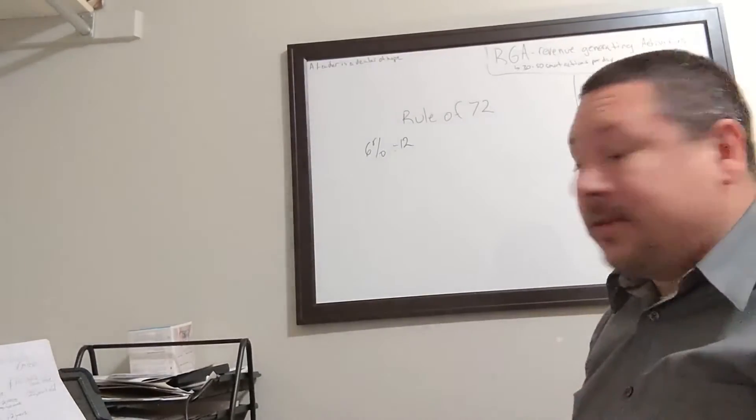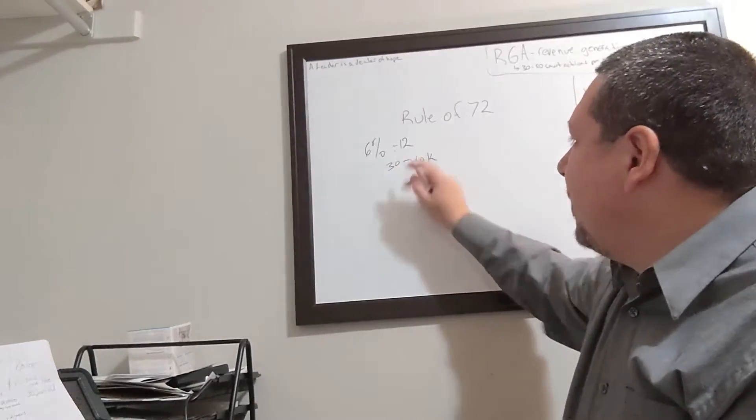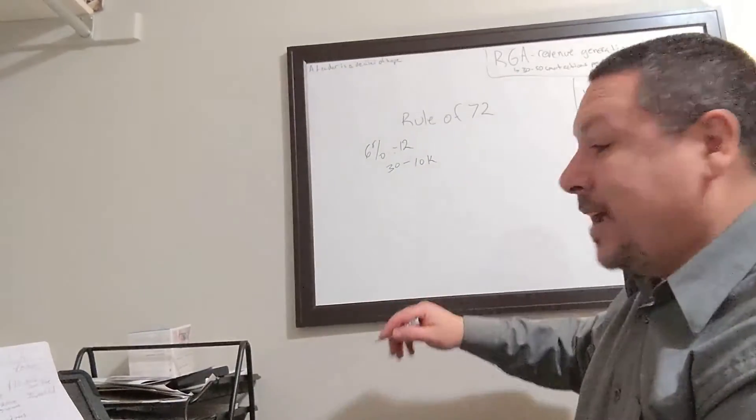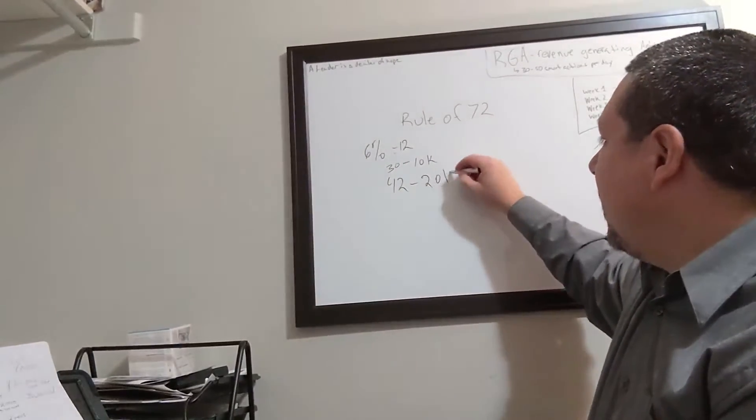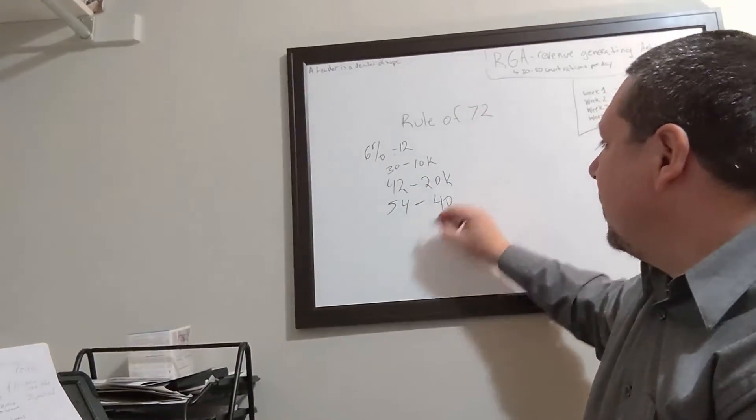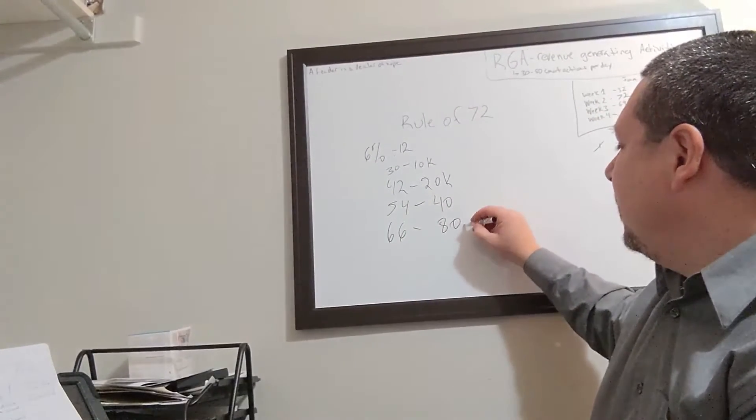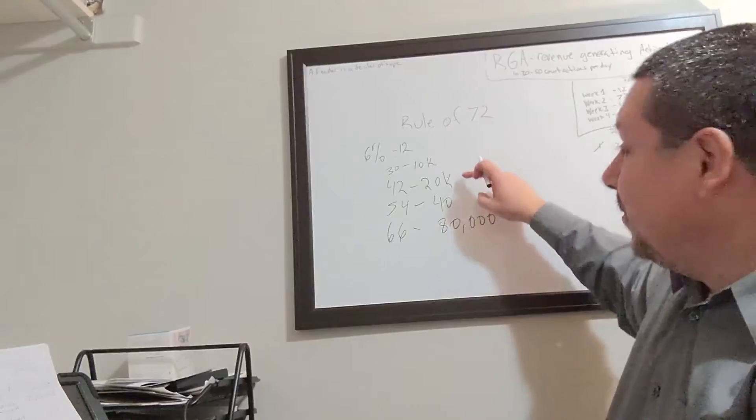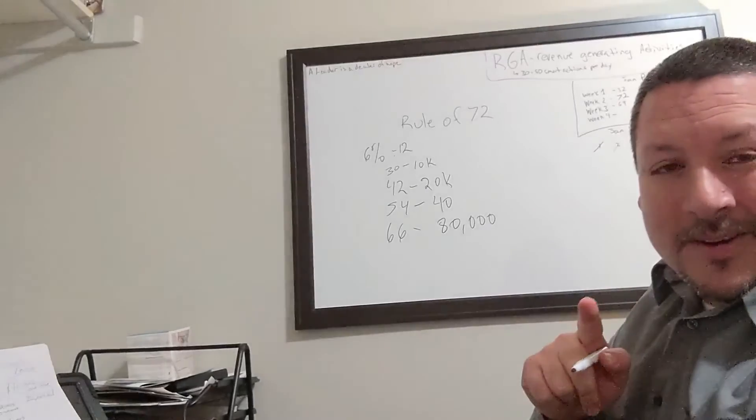Let's say at 30 years old you put in $10,000. Then add 12 years—at 42 you're at $20,000, at 54 you're at $40,000, at 66 you're at $80,000. So if you had $10,000 at 6% interest, it would take 12 years to double. Notice the big doubling happens in the end—that's really important for investments.